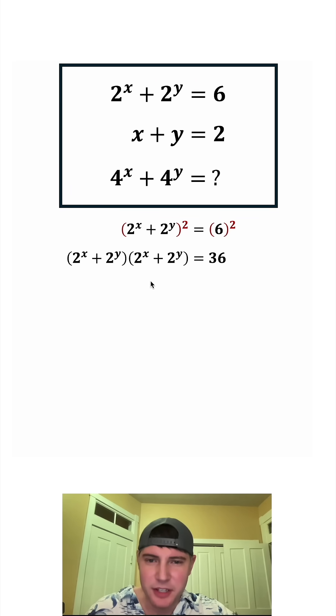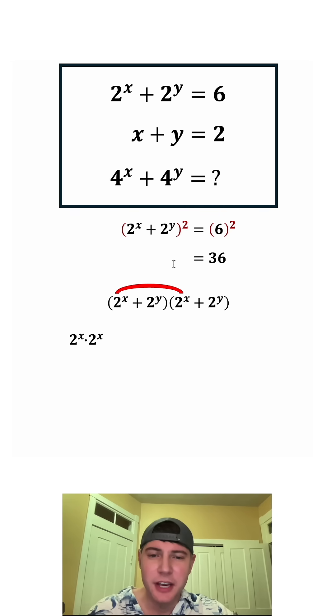So what is this times this? Let's bring it down here. We're going to multiply all this out. We're going to do 2 to the x times 2 to the x plus 2 to the x times 2 to the y plus 2 to the y times 2 to the x plus 2 to the y times 2 to the y.